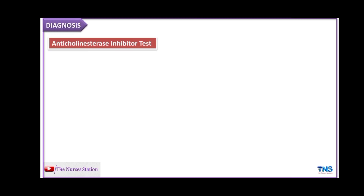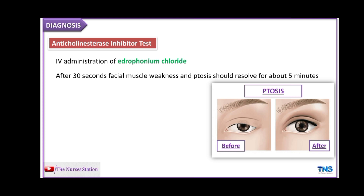Now, how can we diagnose myasthenia gravis? The first test is the anticholinesterase inhibitor test. When acetylcholine is released into the neuromuscular junction and finishes its job, it is stored back into the vesicles in the nerve terminal, and some acetylcholine undergoes breakdown by the cholinesterase enzyme. In the anticholinesterase inhibitor test, edrophonium chloride is administered intravenously to inhibit cholinesterase and prevent the breakdown of acetylcholine, which increases the concentration of acetylcholine at the neuromuscular junction and results in temporary resolution of muscle weakness. Thirty seconds after IV administration of edrophonium chloride, facial muscle weakness and ptosis should resolve for about 5 minutes.